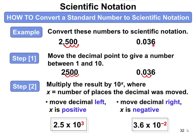For 0.036, in order to turn that into scientific notation, we would move the decimal two times to get to 3.6, because that's a number between 1 and 10. We're moving it two times, so the exponent is going to be 2. But because it's a small number, it's going to be negative 2. So 3.6 times 10 to the negative 2 would be the answer.